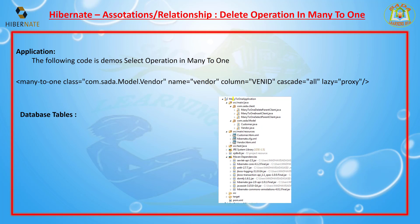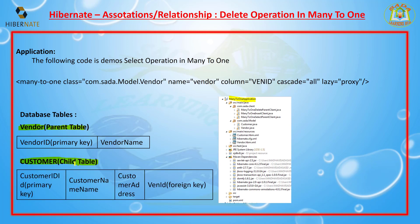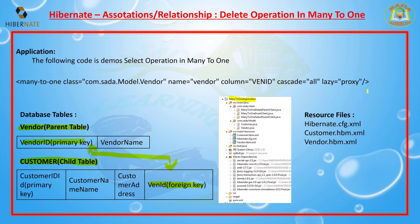I'm going to explain a simple example for this. I'm creating a many-to-one application with two tables in the database. The first one is a vendor table — vendor is the parent table. The other one is the customer table — that is the child table. In the vendor table, vendor ID is the primary key, and in the customer table, vendor ID is the foreign key. I'm establishing the relation between the two tables using the vendor ID.